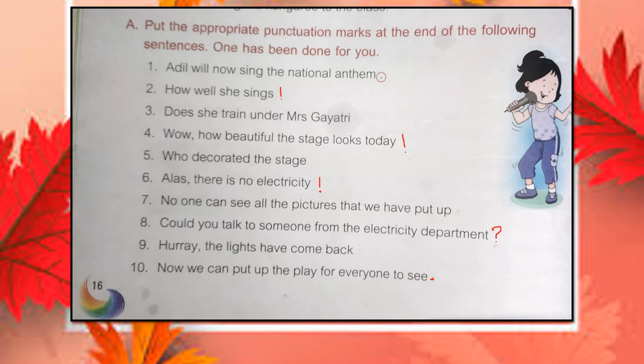Children, question numbers three, five, seven, and nine — try to do those by yourself. I'm giving this for your homework. In the next class, we will discuss more about punctuation marks and do some more exercises. If there is any doubt, do write to us and we will do a doubt clarification session. Till then, keep learning. Bye-bye!